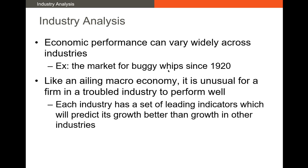Economic performance varies across industries. A good example is buggy whips since 1920 — we've seen massive consolidation and most buggy whip manufacturers no longer exist. The key takeaway from the product or industry life cycle is that if we identify an ailing, declining industry, there's probably not going to be a lot of great performers or undervalued securities in that industry, so we would generally want to avoid it.